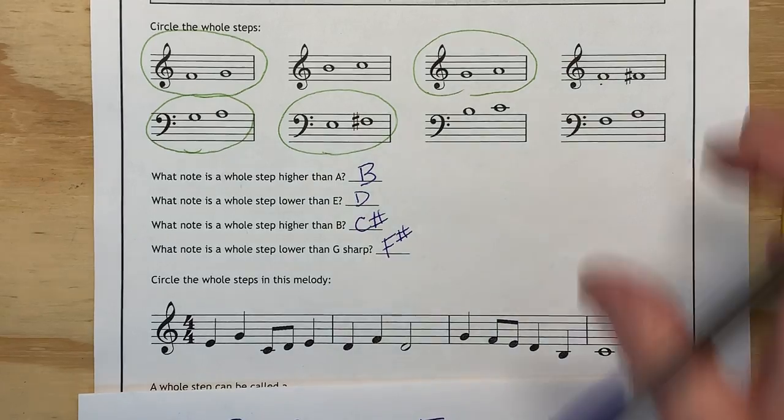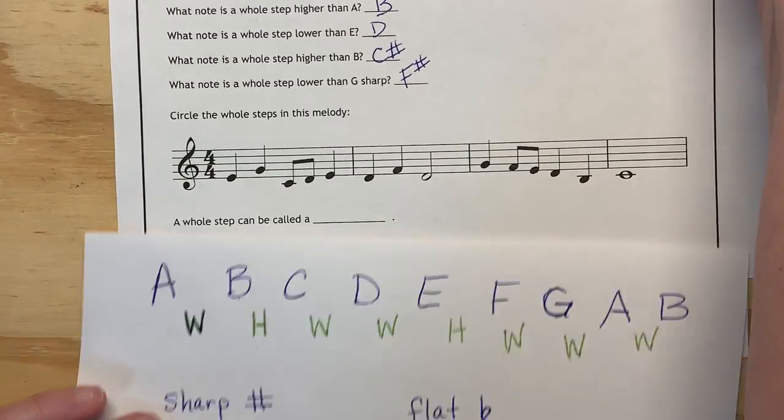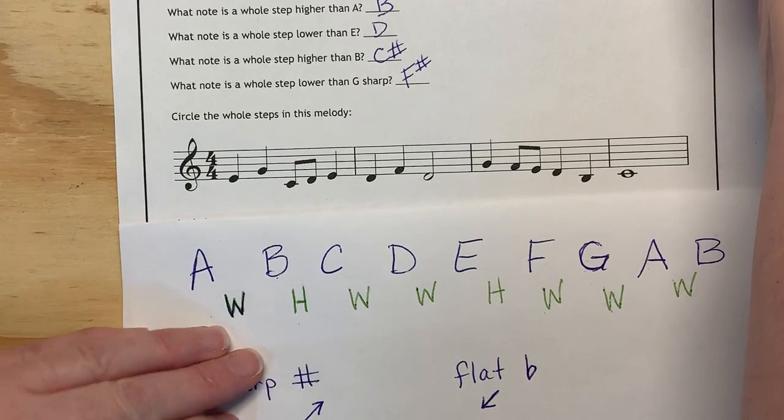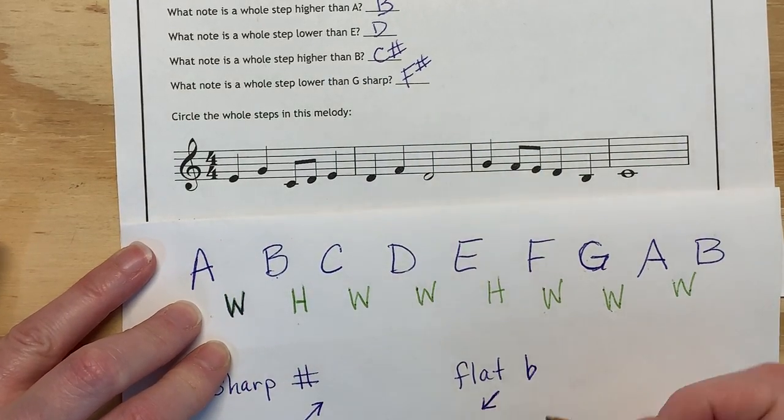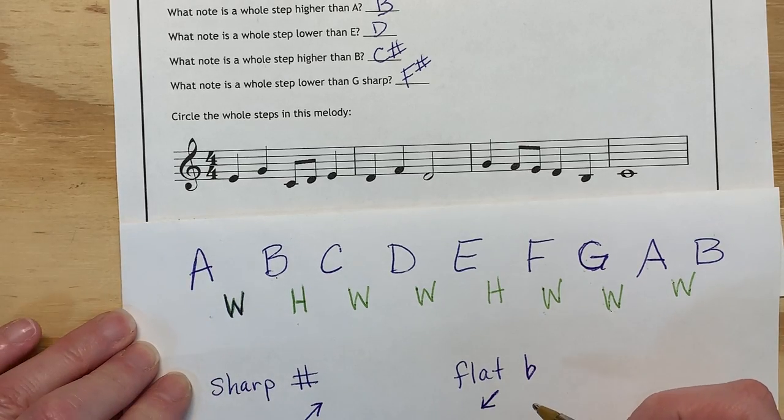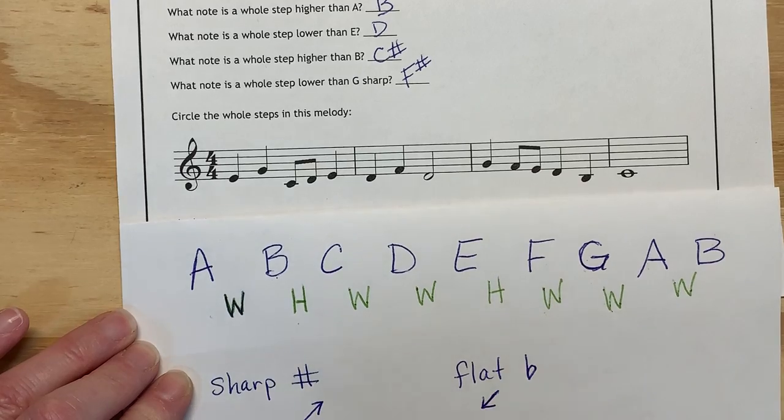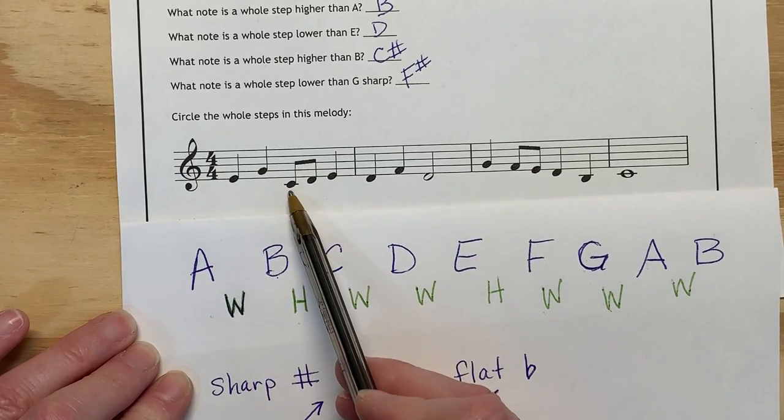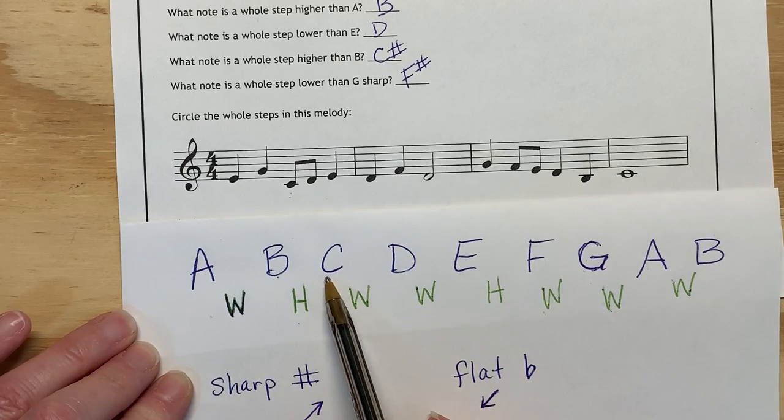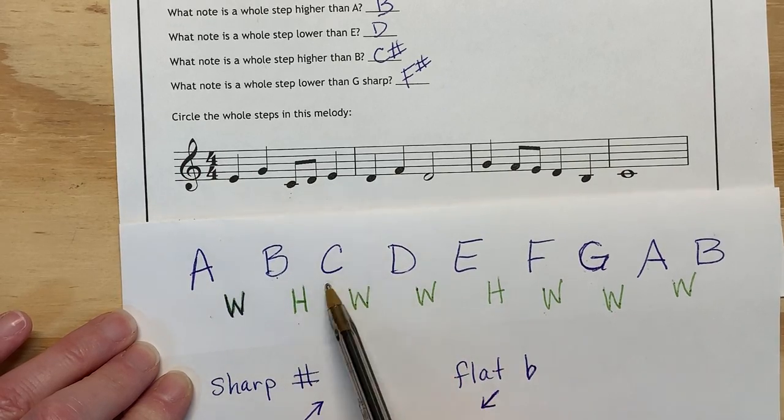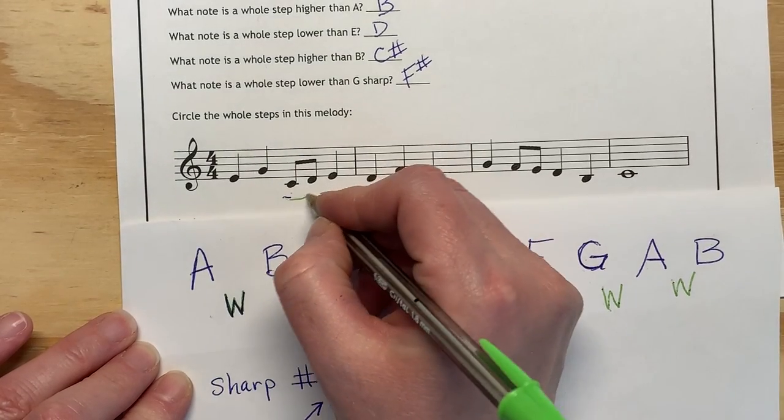Circle the whole steps in this melody. So as we look at this melody, we're looking for the whole steps. E to G, that jumps right over something, that's not a whole step. All the way down, that's way too big from a G to a C. C to a D, that's a whole step.